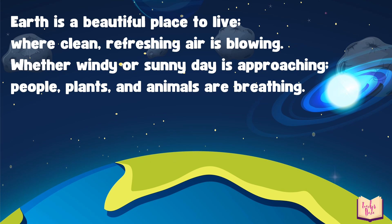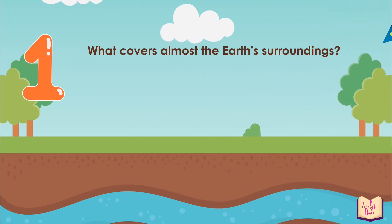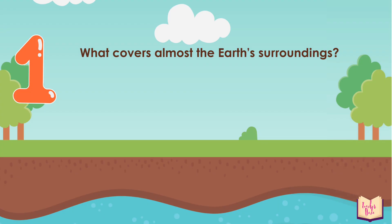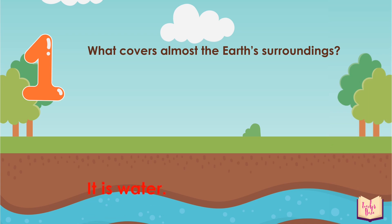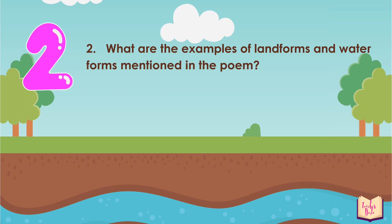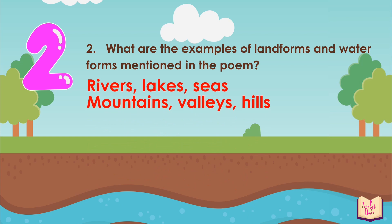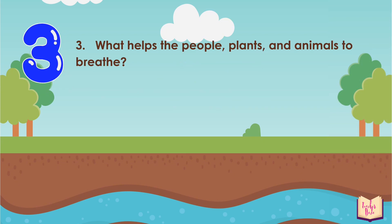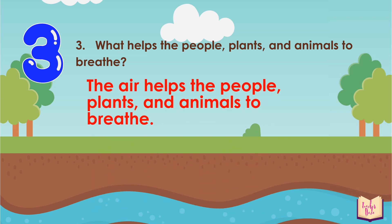Now, let us answer the following questions. First, what covers almost the Earth's surrounding? The answer is water. Second, what are the examples of landforms and water forms mentioned in the poem? The answers are rivers, lakes, seas, mountains, valleys, and hills. Third question: what helps the people, plants, and animals to breathe? The answer: the air helps the people, plants, and animals to breathe.